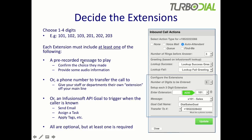Each extension is going to have configuration with at least one of the following items: a pre-recorded message to play, used to confirm the choice entered by the caller or provide audio information; a phone number that the call will be transferred to, giving departments or team members their own extension off the main public line; or an Infusionsoft API goal that could be triggered when an extension is entered, as long as the call is from a known contact — used to send an email, assign a task, apply tags, et cetera. Each of these three is optional, but you must have at least one.